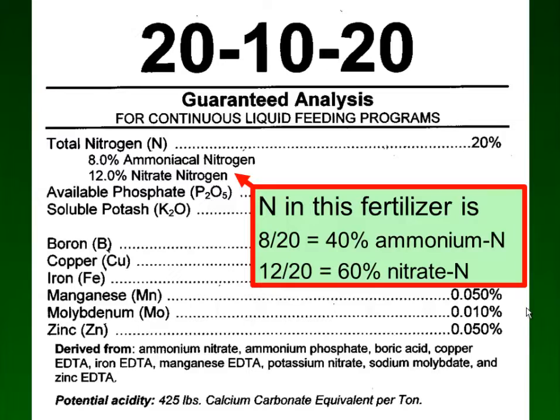So 8 divided by 20: 40% of the nitrogen is ammonium, and 60% is nitrate. More of the nitrogen is in the nitrate form than ammonium.